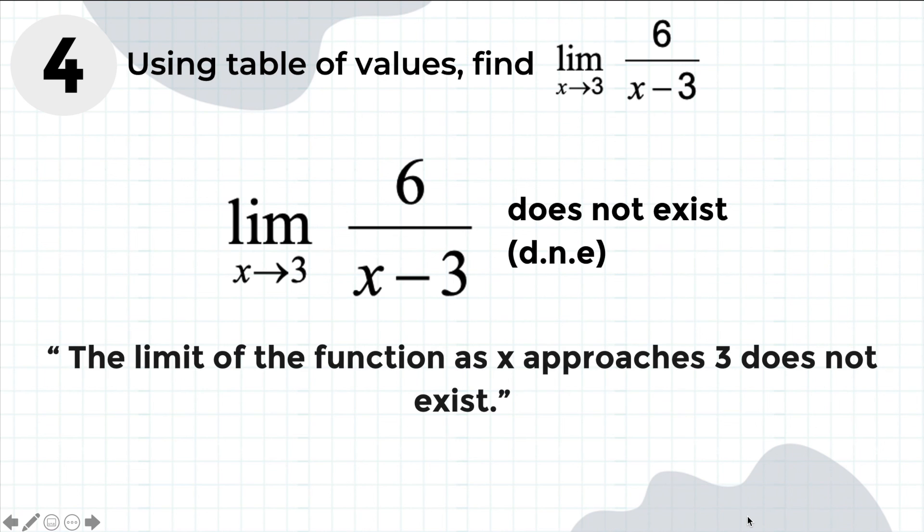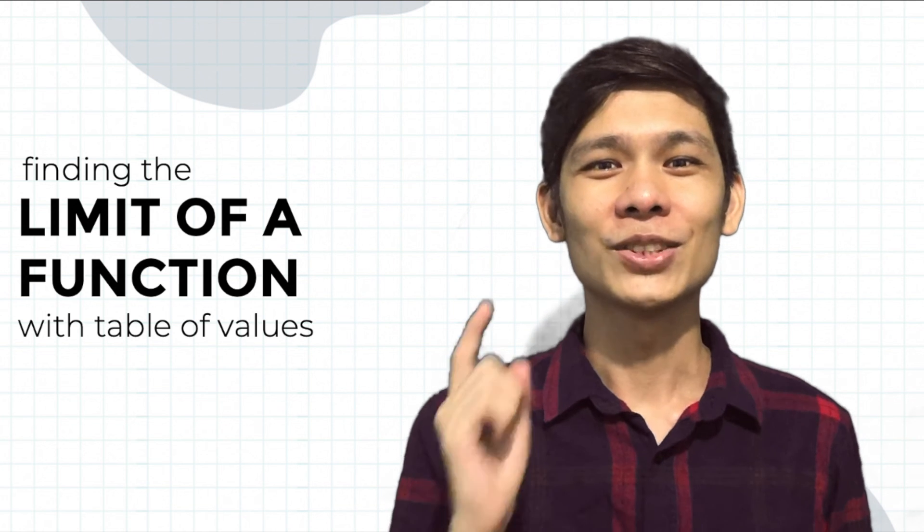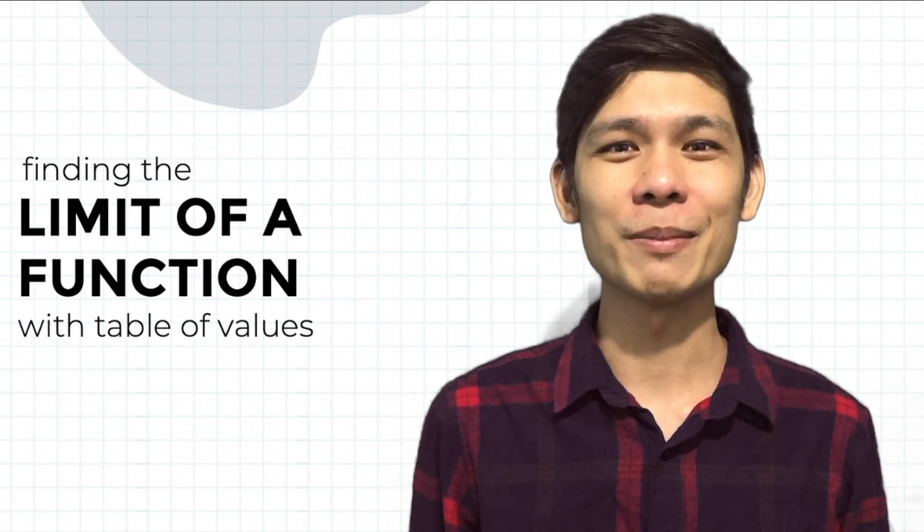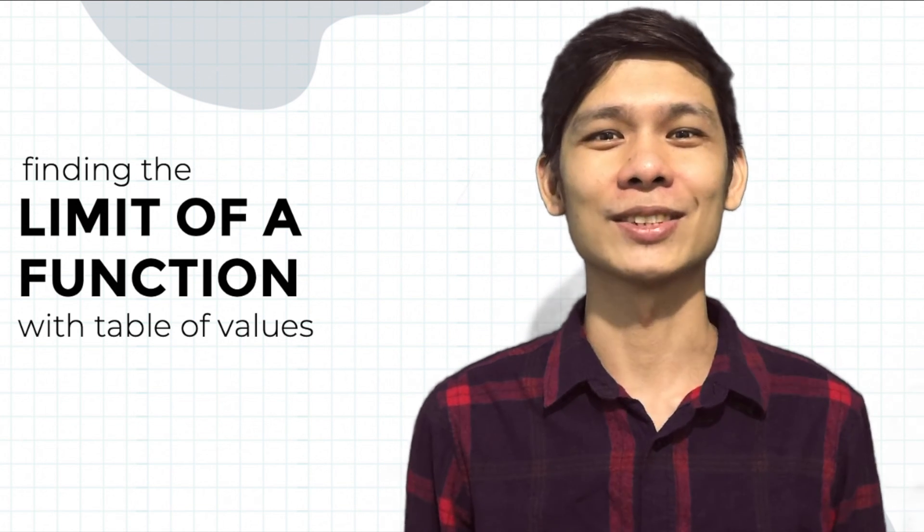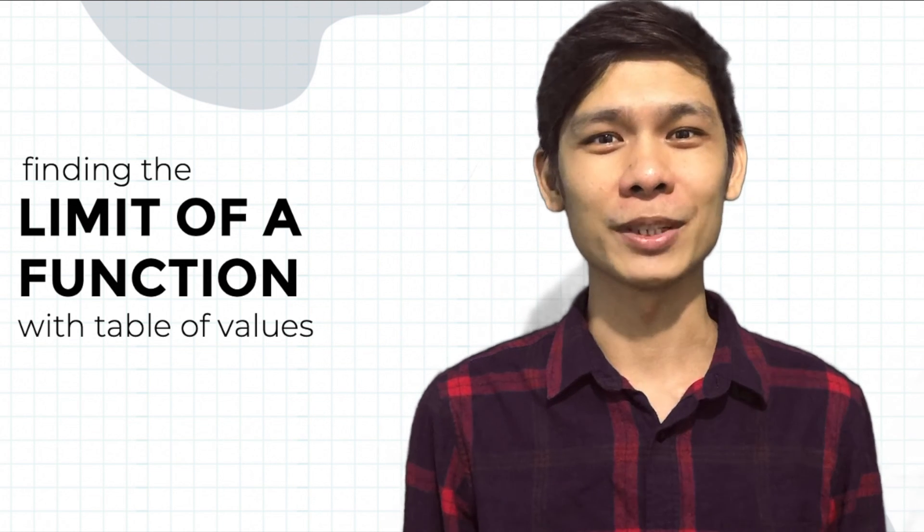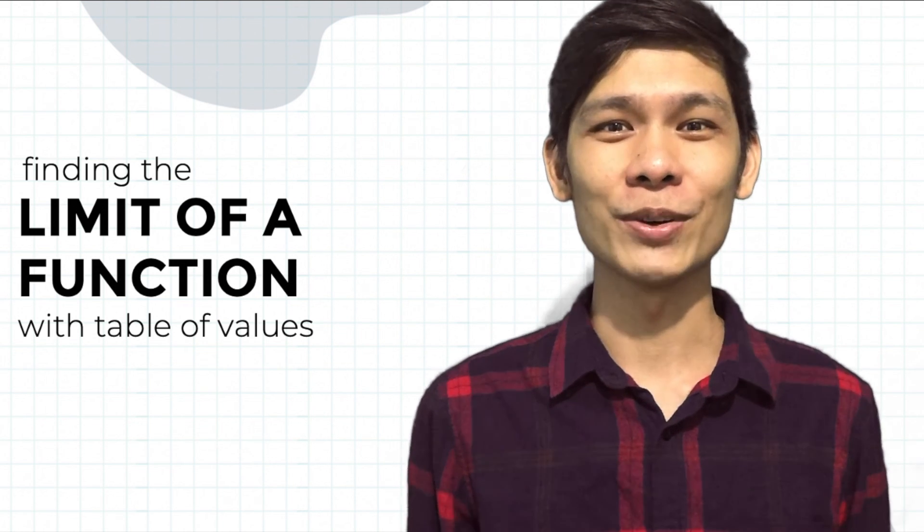So the question is, how do you write down if the limit does not exist? You may use the acronym DNE, which stands for does not exist. So this is how you basically solve for the limit of a function using table of values. Thank you for watching this video and I hope you learned something today. See you in our next video!